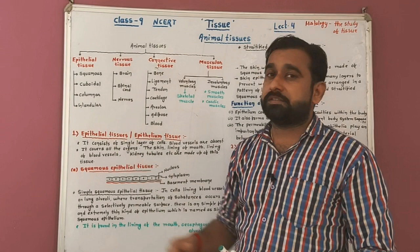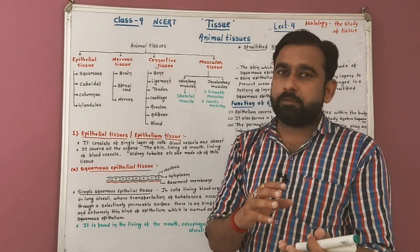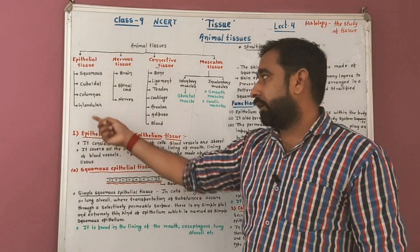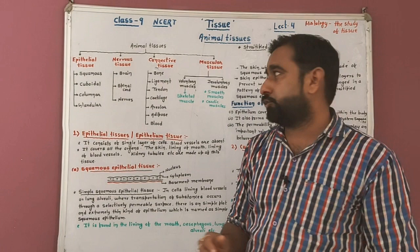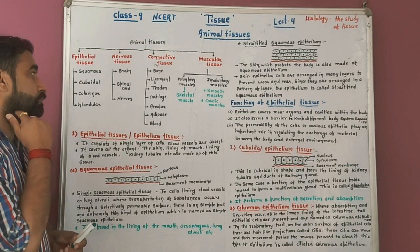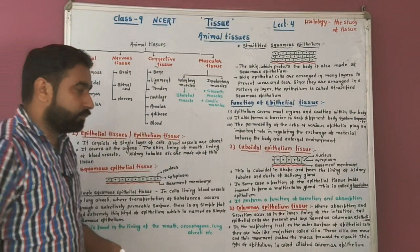Epithelial tissue is further divided into four types. The next type is nervous tissue — in nervous tissue, we discuss about the brain, spinal cord, and nerves.